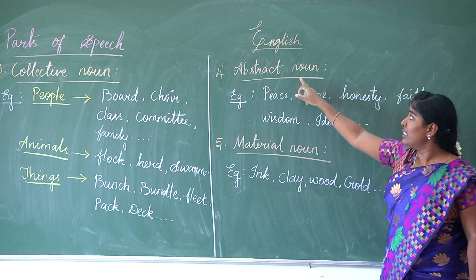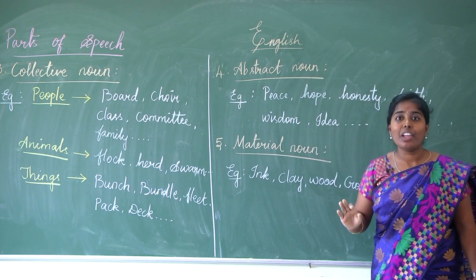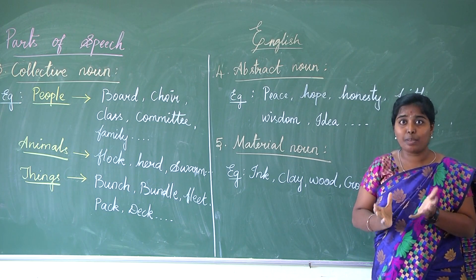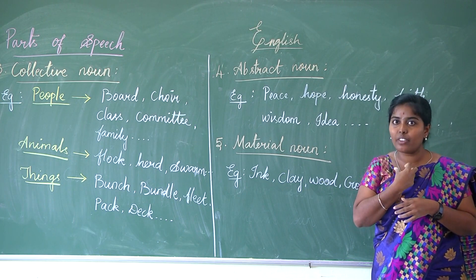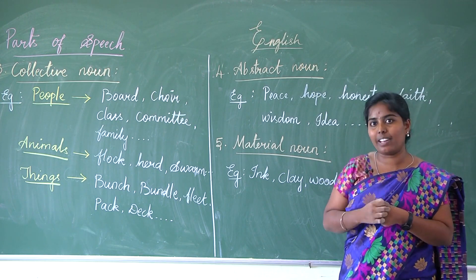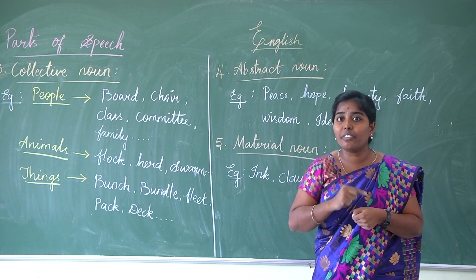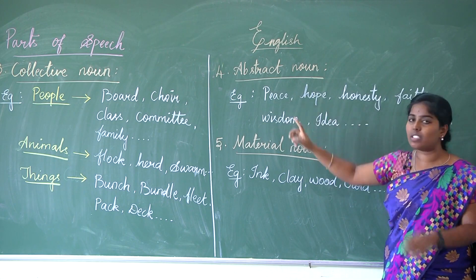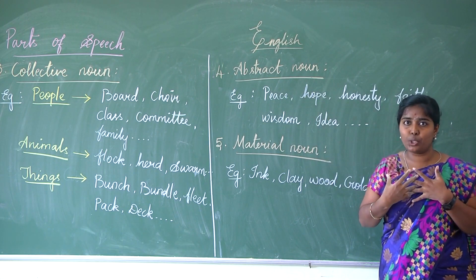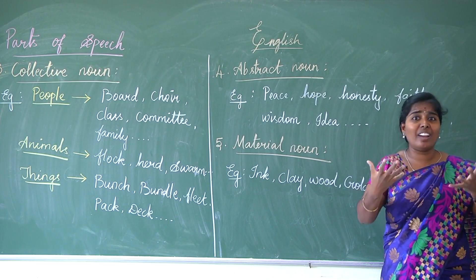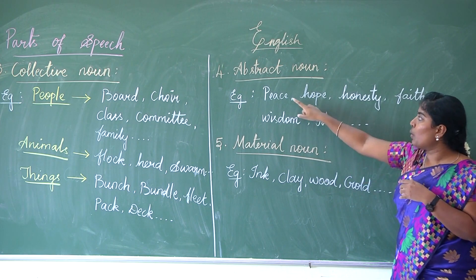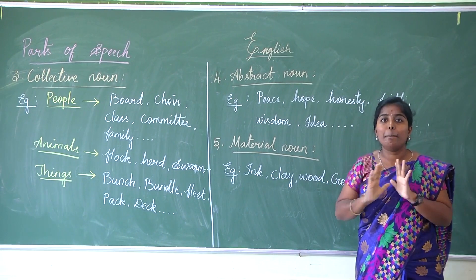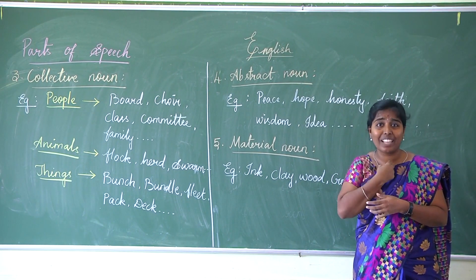Next, abstract noun. Abstract noun is a thing where you cannot show people because it is an unseen thing — you can only feel it. It's more like an inner feeling. For example, if you have a wound on your hand, others can see the wound, but the pain or feeling can only be sensed by you. Words like peace, hope, honesty, faith, wisdom, idea — all these can be felt but we cannot show them to others.